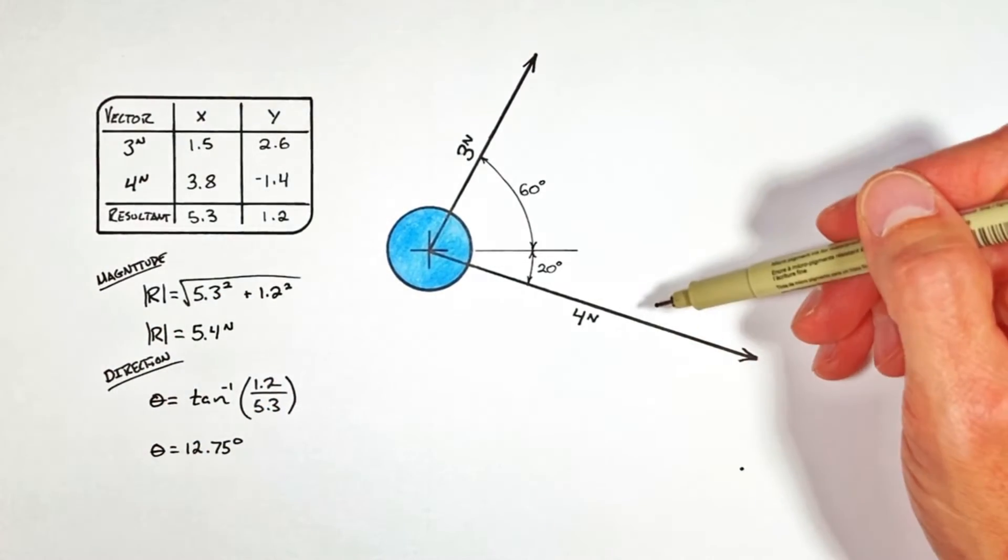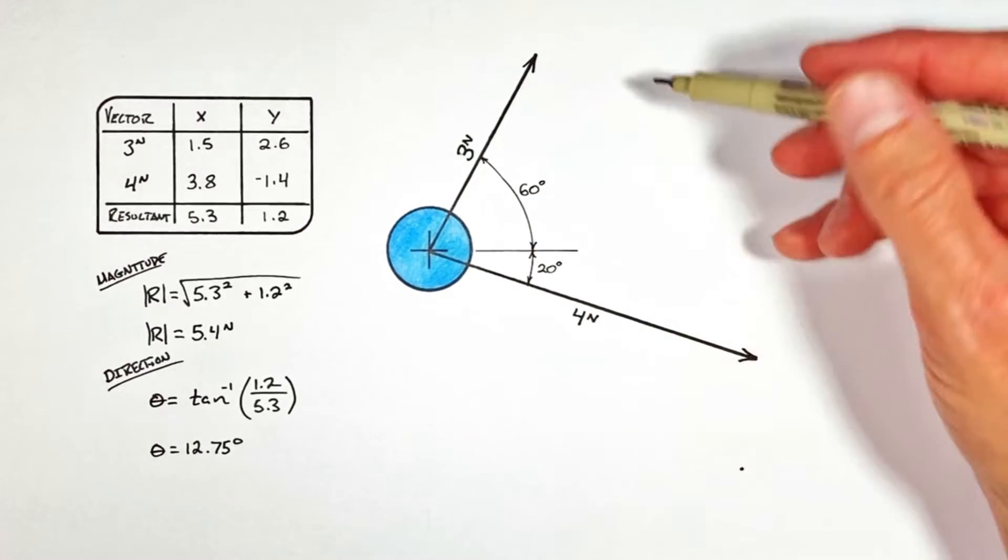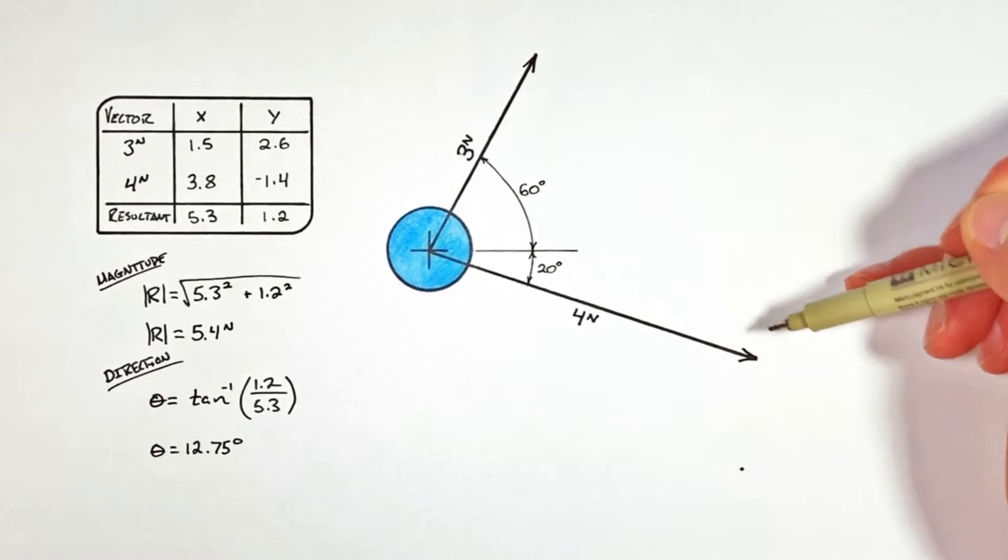But there's another way to add vectors together which doesn't involve any math and that is what's called the tip-to-tail method of vector addition.